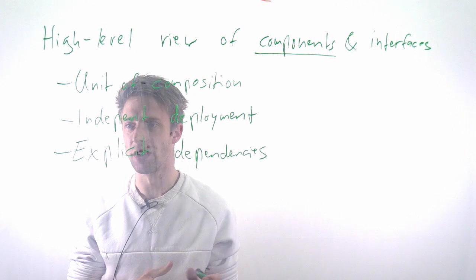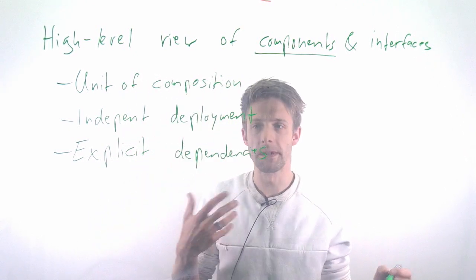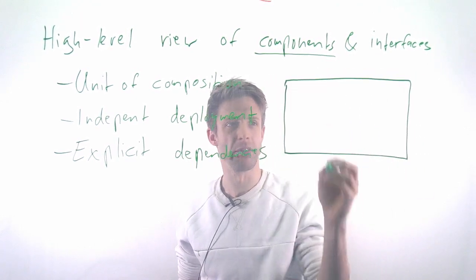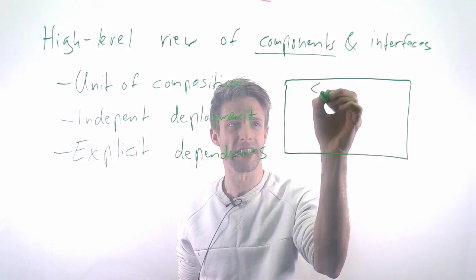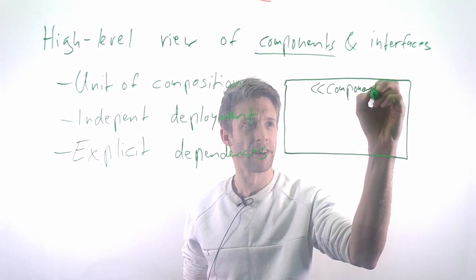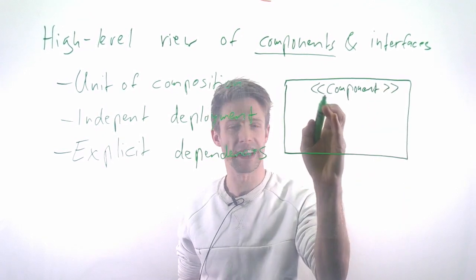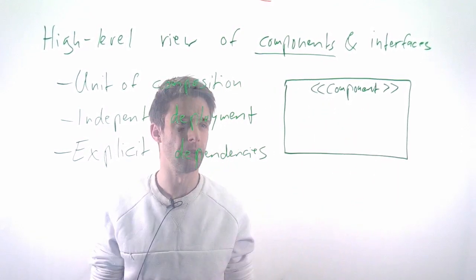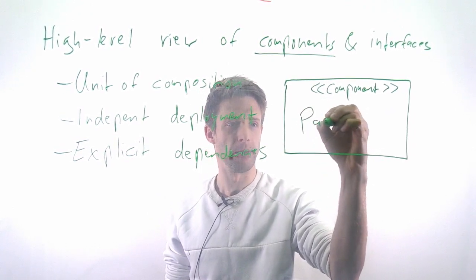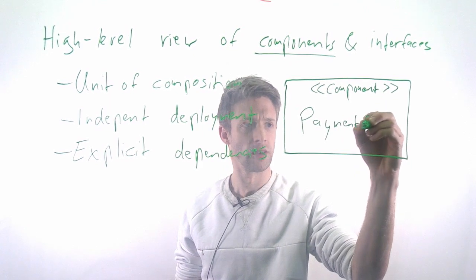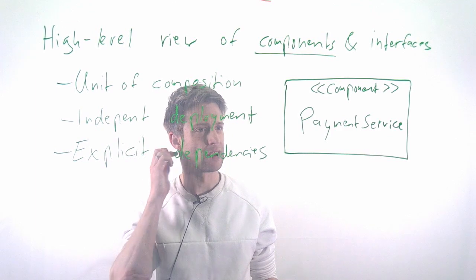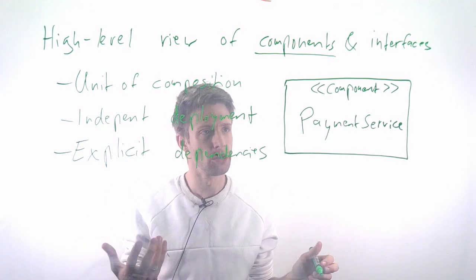To represent this in UML, you basically use boxes for components. You have a box, a rectangular thing, and you write component in these angle brackets, so it's a stereotype. I can give this a name, for example, this might be my payment service. This is the component that can handle payments.